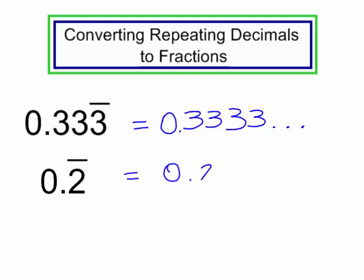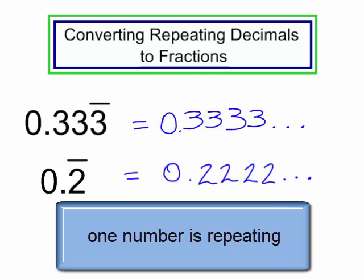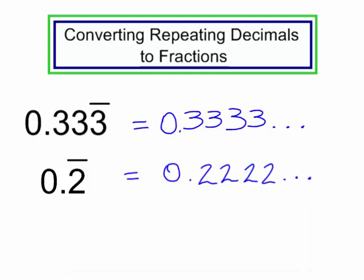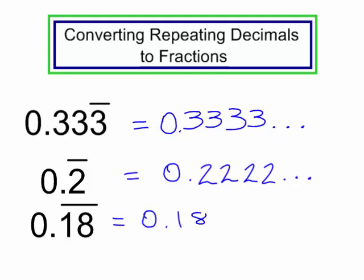The 2 is repeating, so it's 0.222 and on and on and on. Both of these only have one number repeating. 0.18 with a bar over two numbers this time — the 1 and the 8. This number is 0.1818 and it goes on and on and on.